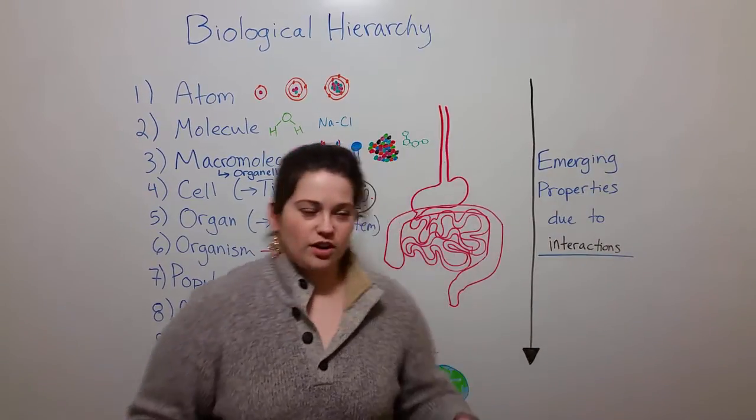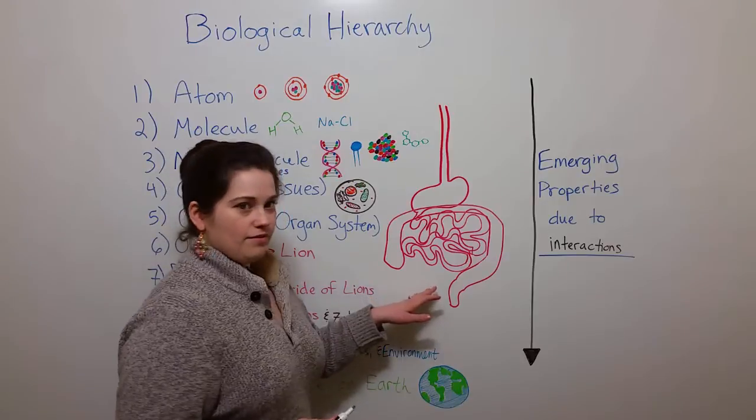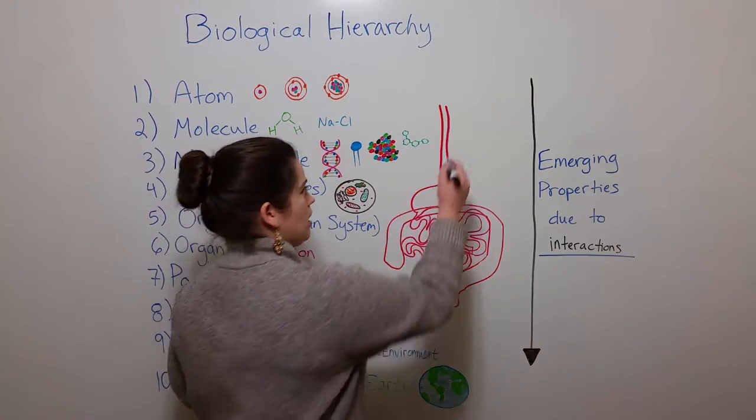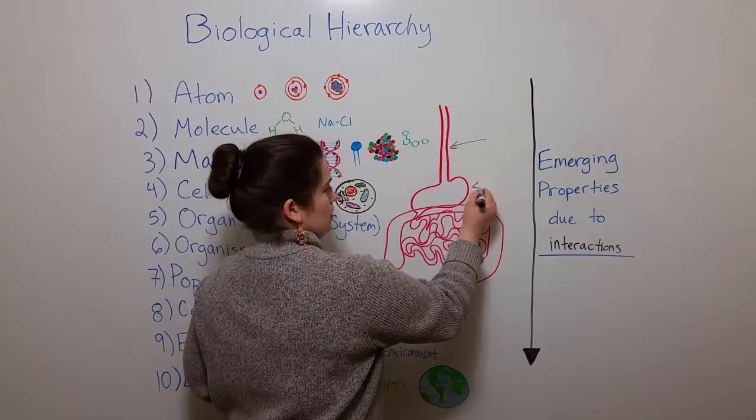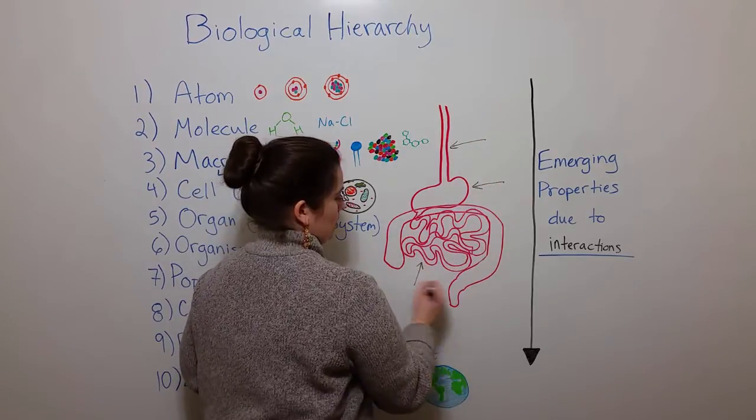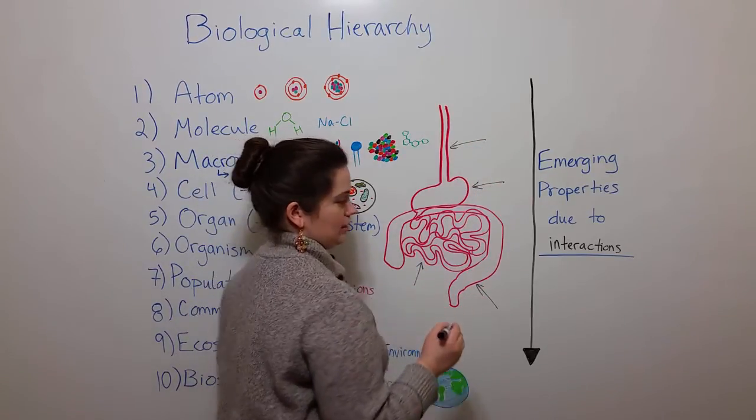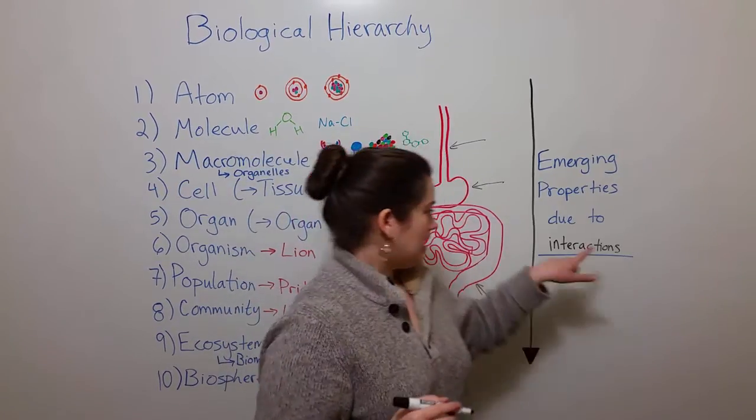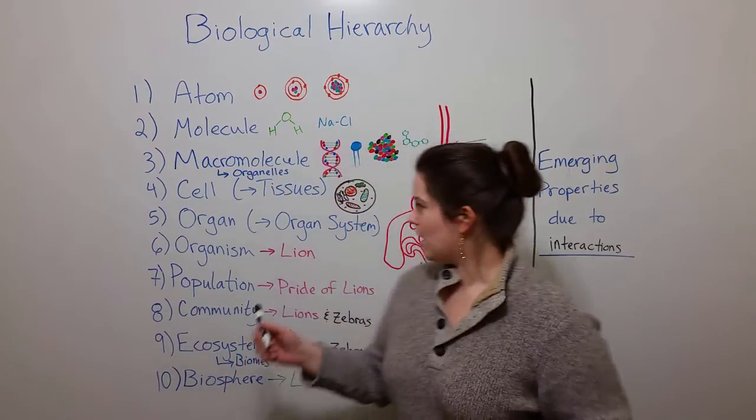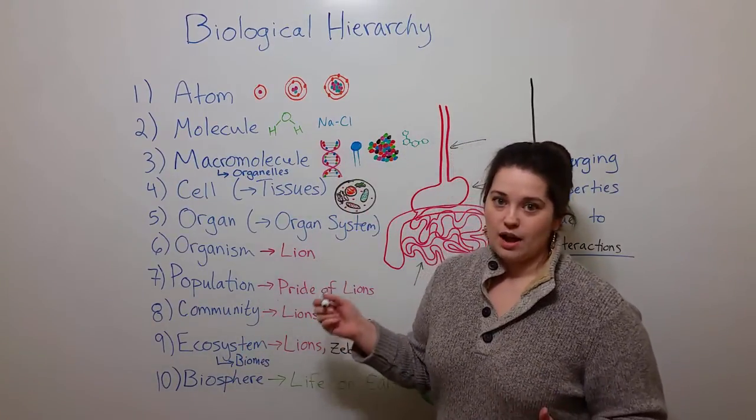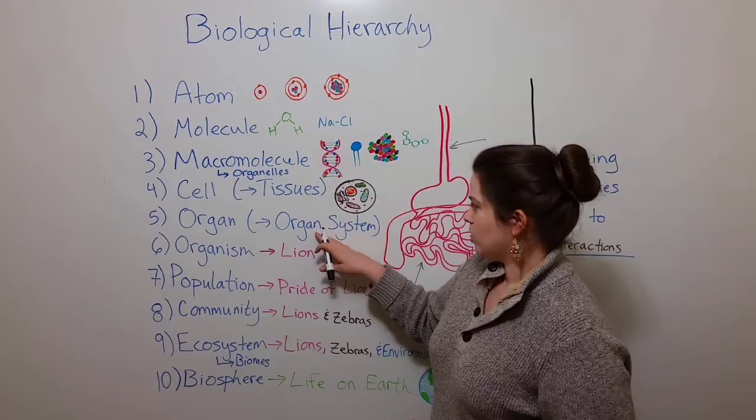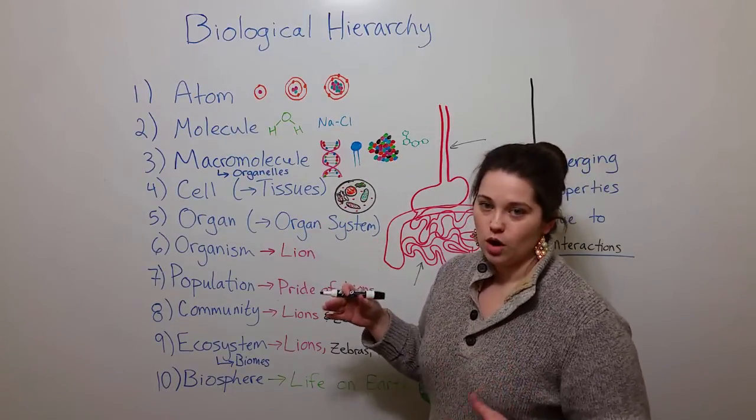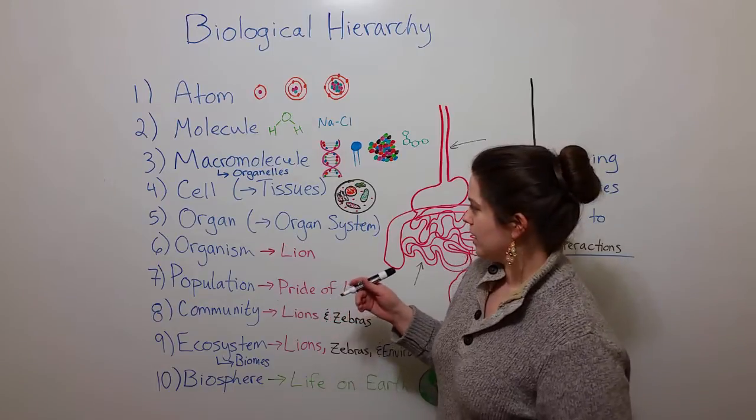For example, here we have a simplified drawing of the digestive system, which is made up of multiple organs. You've got the esophagus, the stomach, the small intestine, and the large intestine. So these are different organs that are interacting to allow organ systems to carry out their functions, which are a greater function overall than the individual organs.